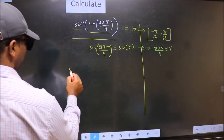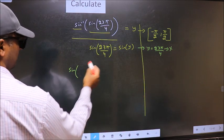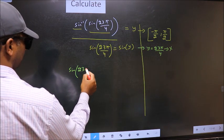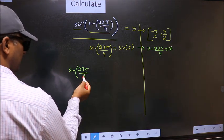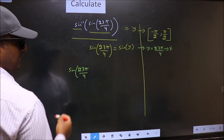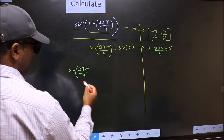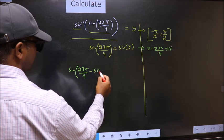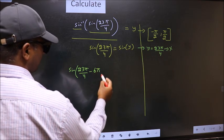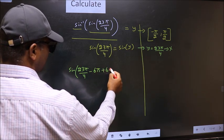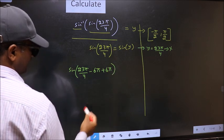Next. 23 pi by 4 does not lie in that interval. So we should decrease it. And to decrease I subtract 6 pi. Now whatever we are subtracting we should also add the same thing.